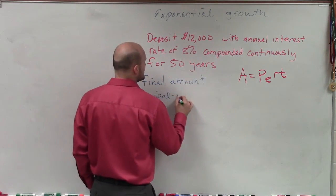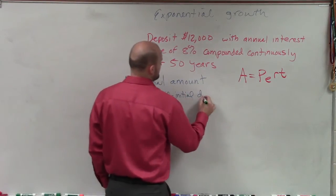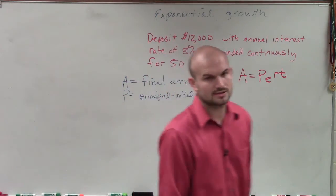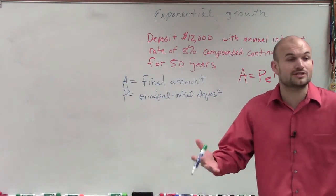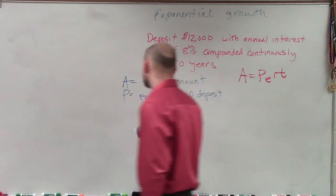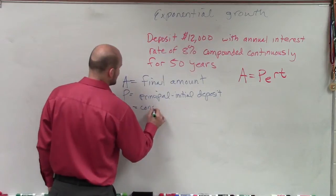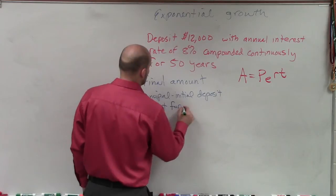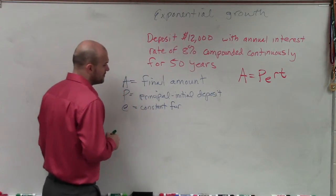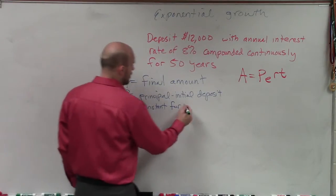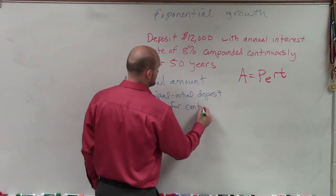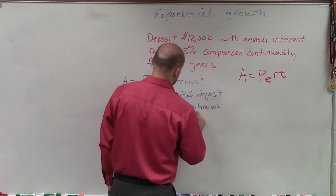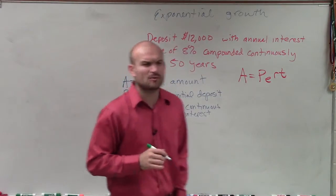And what that is — that's your initial deposit, or your initial amount. Then we're going to have E, and that's going to equal our constant for our continuous interest. I'll explain that a little bit more once we get into that.